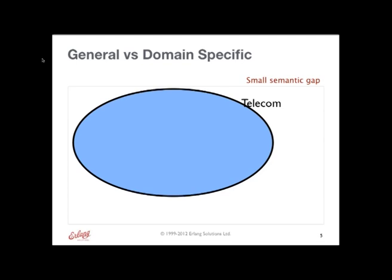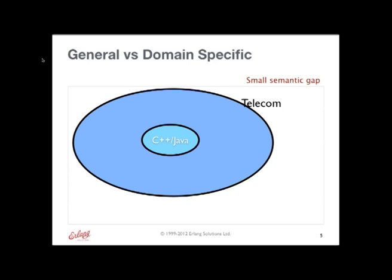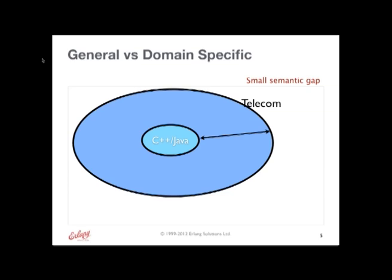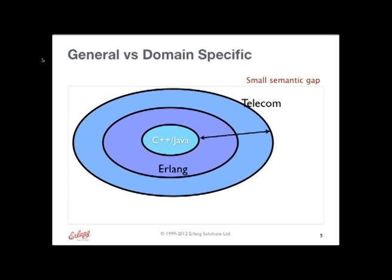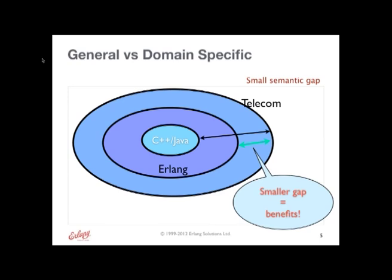You need to separate the notions between a general purpose programming language and something domain-specific. In the domain of telecom, you need to fill out the gap between what a language provides and what you need to do. Ericsson mostly looked at C as the starting point — today you'd have C++ and Java. There is an entire gap between what the language provides and what you need in your domain; the bigger the gap, the more work you need to do. Erlang was created to fill out a lot more of those requirements, resulting in a smaller gap — and that smaller gap equals a lot of benefit: far less code to write and maintain, which equals money.